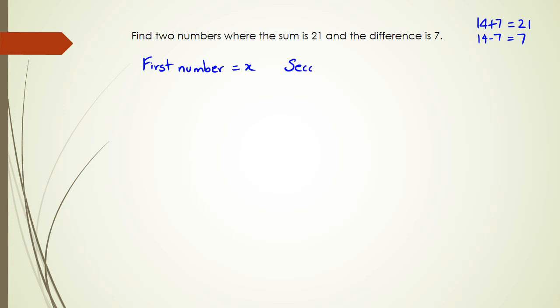I'm going to say let's make the first number as x and the second number is y. Now it says the first number and the second number when you add it together is 21, so x plus y equals 21. That's my first equation.